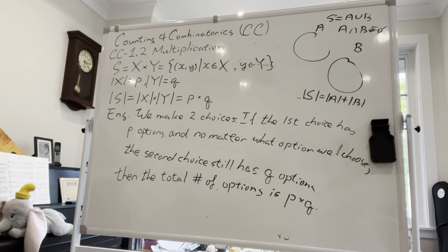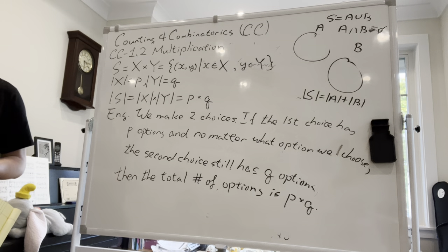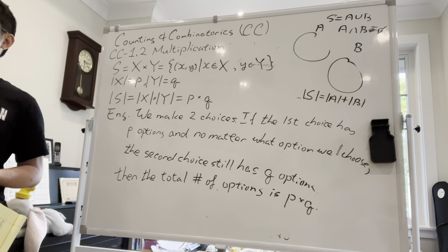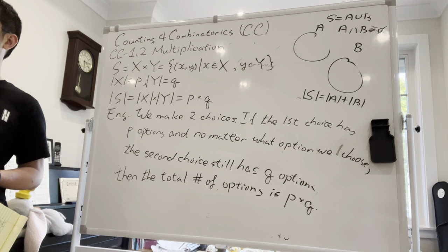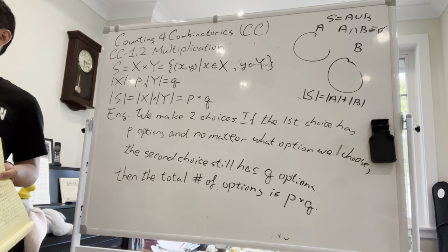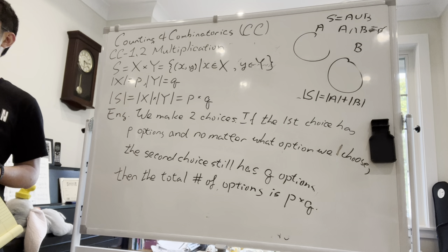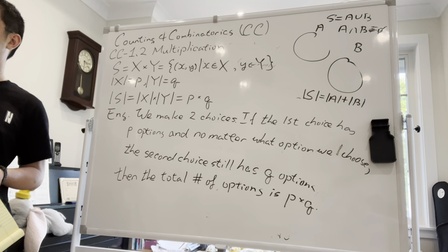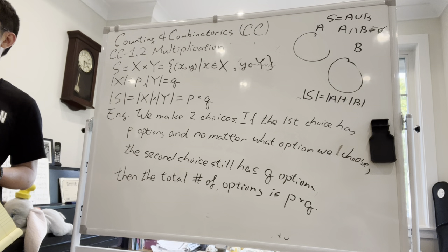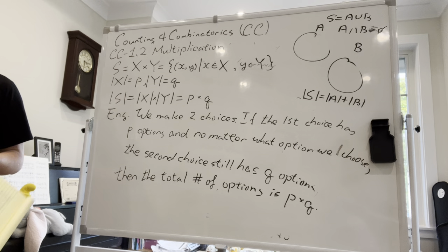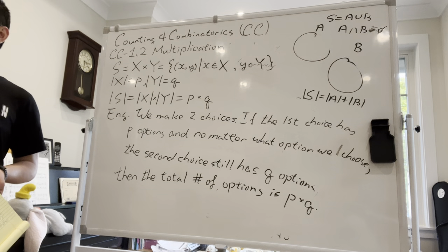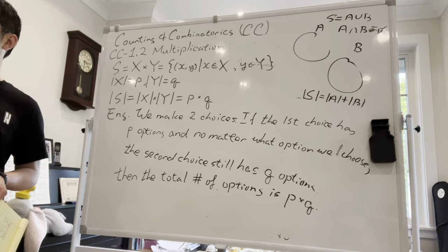Let me give a verbal example. Think about when you go to a fast food restaurant: you have two choices of soda — Coke or Sprite — and two choices of burger — burger or cheeseburger. The total number of choices is two times two, because whether you choose Coke or Sprite you still have two options for your second choice. So the total is four choices. Does this make sense for everyone?